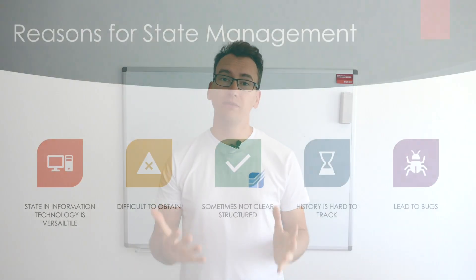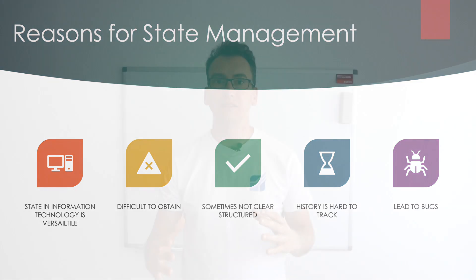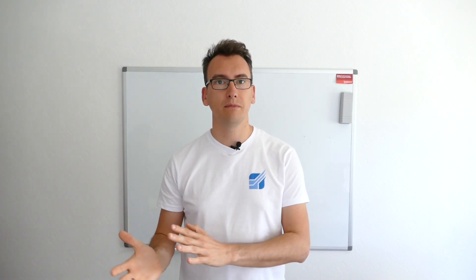Why are there reasons for state management? There are plenty of them. One is that state information in a computer or in technology is always very versatile — we have different parts of state: booleans, strings, objects, complex objects, different objects. All of this is state we have to manage and understand. The second thing is it is very difficult to obtain — how do you find out where the state is changed from, what are the different boundaries, where do you get more information about your state? All of these things were more unclear before state management processes were established.